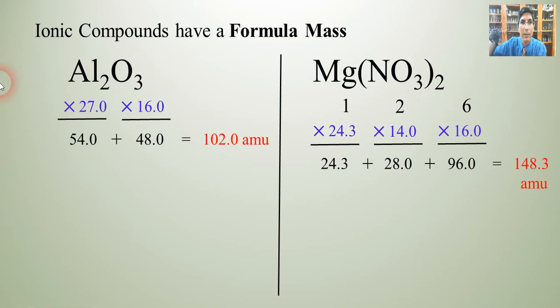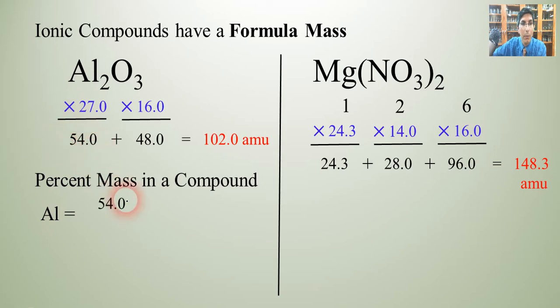So let's try this with aluminum oxide. Now the way that we do that is we just take in the case of aluminum the percent mass, we take the aluminum number the 54 that we got and we're going to divide that by the total formula mass which is 102.0. So when you do that we get that aluminum is 52.9 percent of the mass of that compound.